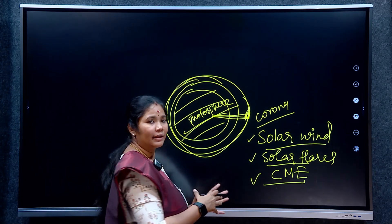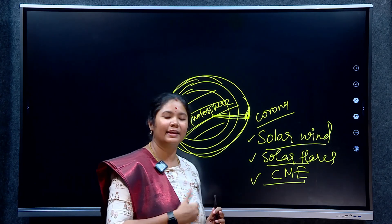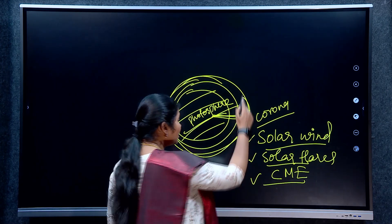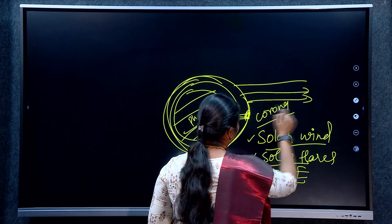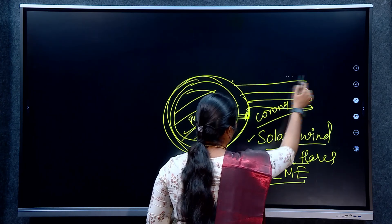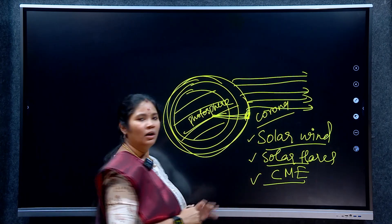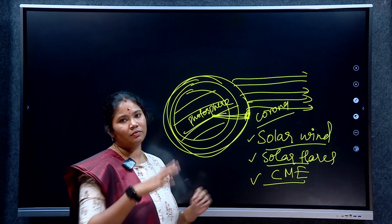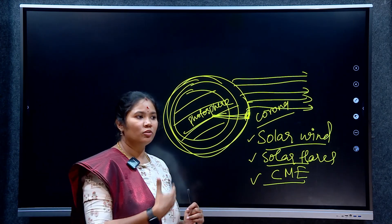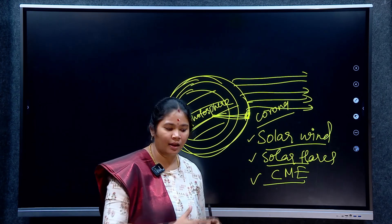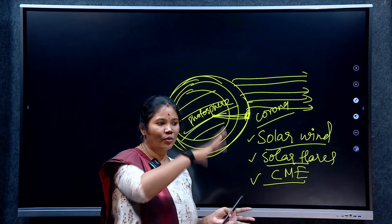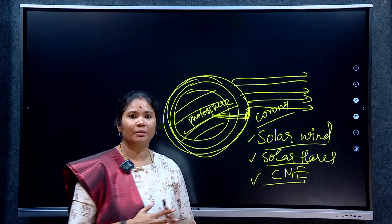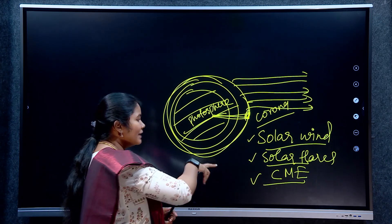Regarding solar wind: the Sun emits heat energy, light energy, plus plasma continuously and spontaneously. This continuous outflow of plasma and charged particles from the Sun is called solar wind. It travels outward from the Sun in all directions.